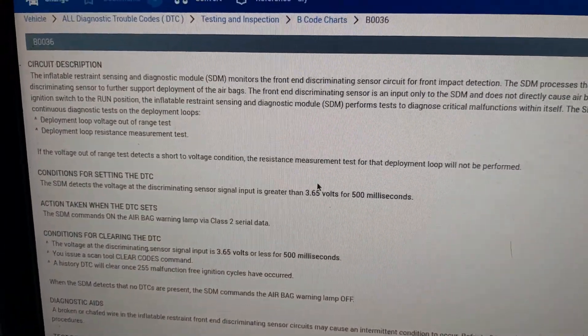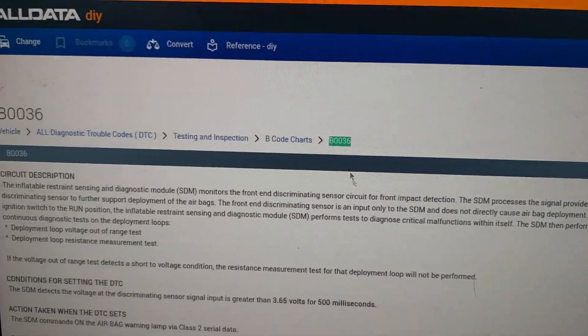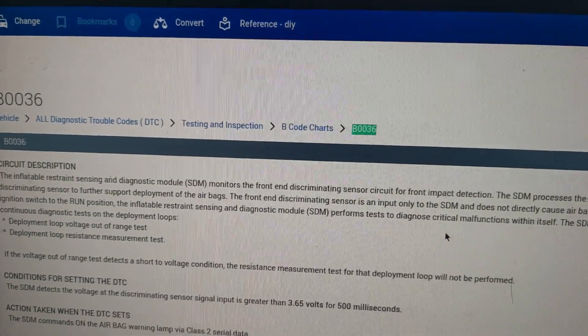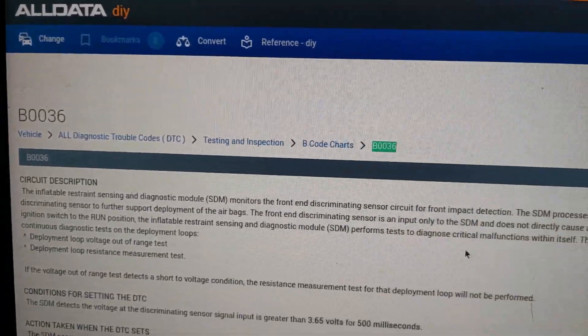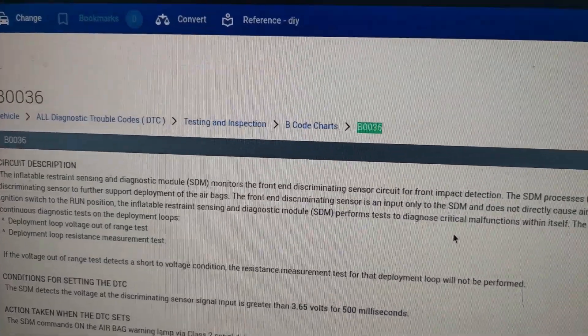Hello. Today we're diagnosing a B0036 code on a Chevy S10 with the airbags. Very annoying intermittent issue when off-roading and under high vibration.